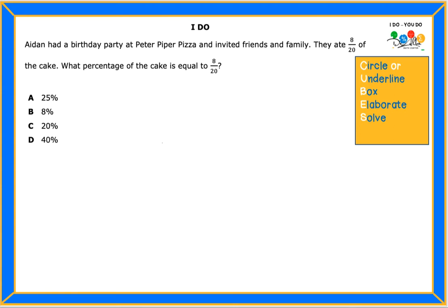And we're using CUBES, the strategy for problem solving. I'm going to get started underlining or highlighting important information. In my first sentence so far, I don't see any numbers or math vocabulary. I'm going to keep going to the next one. And here I have 8 over 20. That's a fraction. I'm going to keep it. That's the fraction they ate. I'm going to highlight that too.